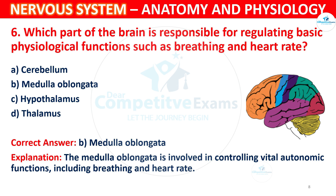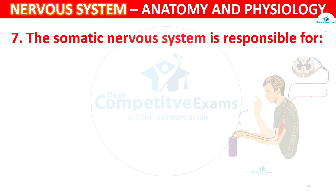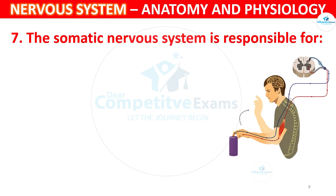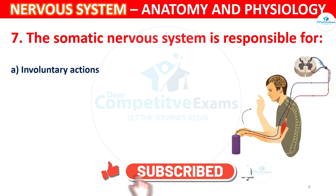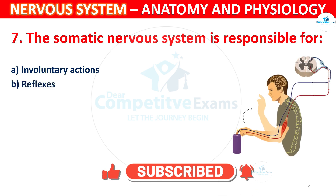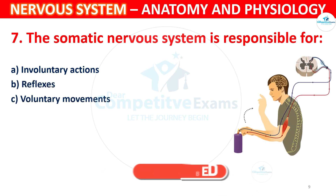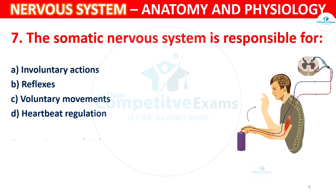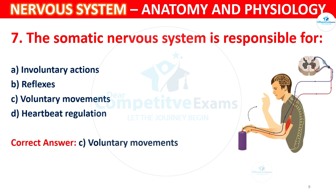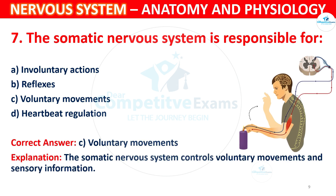Question 7: The somatic nervous system is responsible for which of the following? Options: A) Involuntary actions, B) Reflexes, C) Voluntary movements, D) Heartbeat regulation. The correct answer is C, Voluntary movements. The somatic nervous system controls voluntary movements and sensory information.